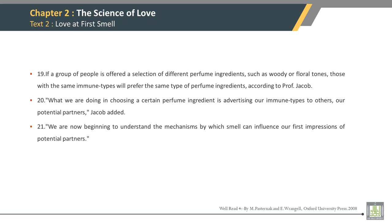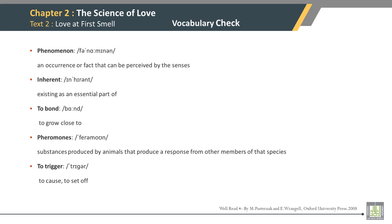First sentence of Paragraph 18: The type of perfume a person wears says more about him or her than previously thought. First sentence of Paragraph 19: If a group of people is offered a selection of different perfume ingredients such as woody or floral tones, those with the same immune types will prefer the same type of perfume ingredients, according to Professor Jacob. First sentence of Paragraph 20: What we are doing in choosing a certain perfume ingredient is advertising our immune types to others — our potential partners, Jacob added. First sentence of Paragraph 21, which is also the last sentence of the text: We are now beginning to understand the mechanisms by which smell can influence our first impressions of potential partners.